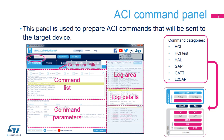The ACI command panel is used to prepare ACI commands that will be sent to the target. The user interface is separated into two main areas: the command part on the left side, which includes the list of commands and the parameters for each command, and the log area on the right side, which displays the details of each selected element.